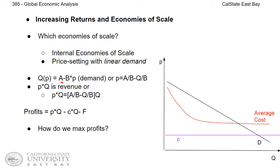So Q equals A minus BP, where A measures the entire customer pool — like how many students there are in total — and B measures how sensitive these customers are to a change in price. From this demand function Q equals A minus BP, we can solve for P in terms of Q, which gives us P equals A divided by B, minus Q divided by B, from some algebraic simplification.